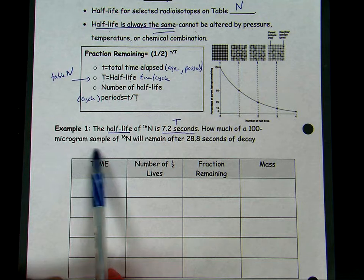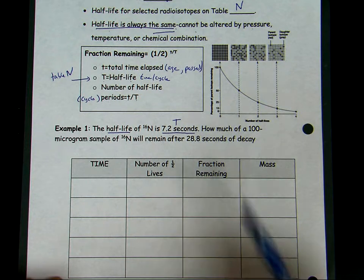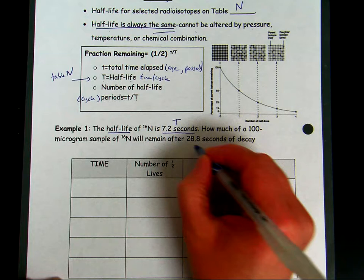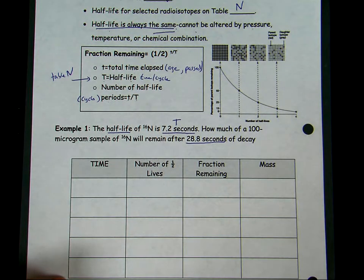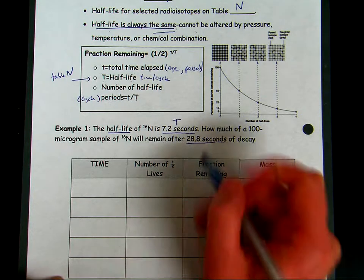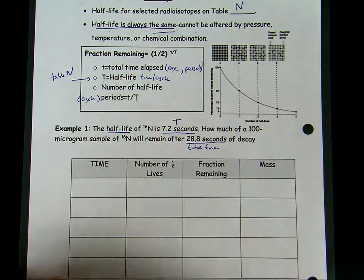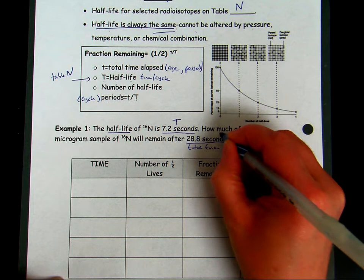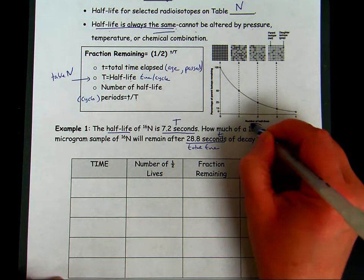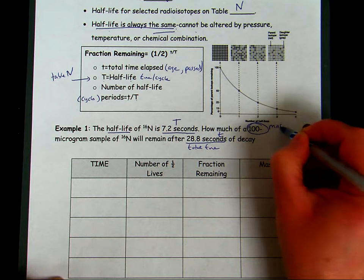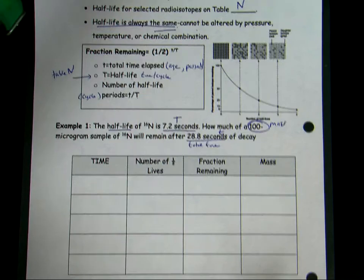If we keep reading, it says how much of a 100 microgram sample of nitrogen-16 will remain after 28.8 seconds of decay. Here we're given a second value for time and it represents that total time that has passed, so that would be represented by that lowercase t. We notice that we are given a mass value.